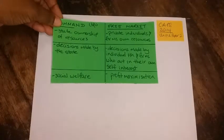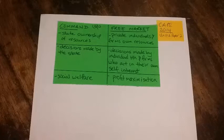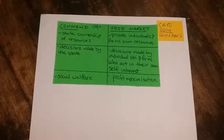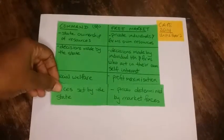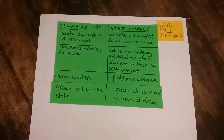For B Part 1 they're asking us to state two differences between a command economy and a free market economy for four marks. In terms of ownership of resources, in a command economy the state owns all resources, whereas in a free market economy private individuals and firms own the resources. For decisions, in a command economy decisions are made by the government, whereas in a free market it's households and firms acting in their own self-interest. In terms of aims, command economies focus on social welfare, while free market economies focus on profit maximization. For prices, in a command economy prices are set by the government, whereas in a free market they are set by market forces of demand and supply.